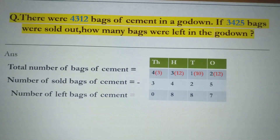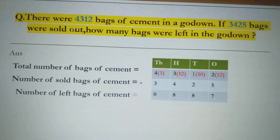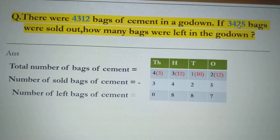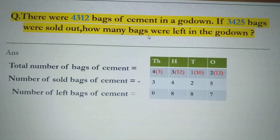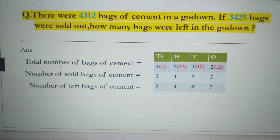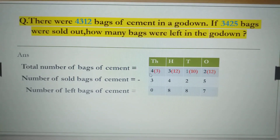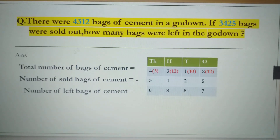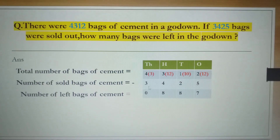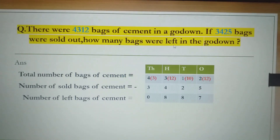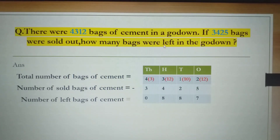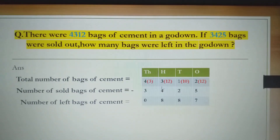Now move to the next question. Our next question is: There were 4,312 bags of cement in a go-down. If 3,425 bags were sold out, then how many bags were left in the go-down? According to the question, the total number of bags of cement is 4,312. The number of sold bags of cement is 3,425. The question asks how many bags were left — the word 'left' tells us we need to do subtraction.